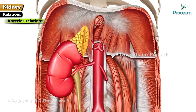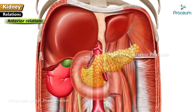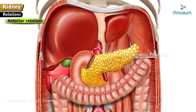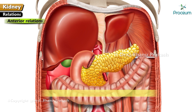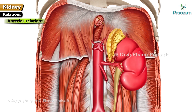Anterior relations of the right kidney are: right suprarenal gland, right lobe of liver, second part of duodenum, hepatic flexure of colon, and jejunum. Liver and jejunum are separated from the kidney by peritoneum.